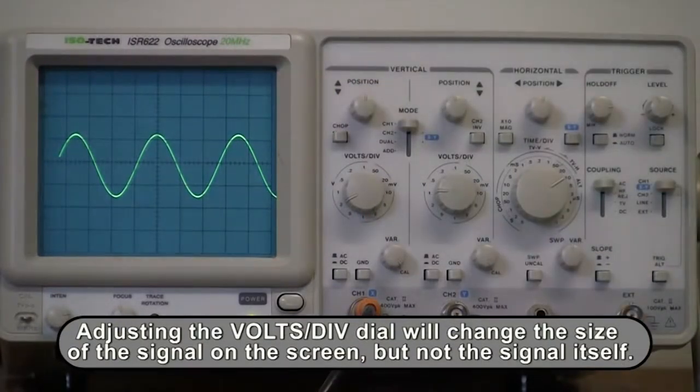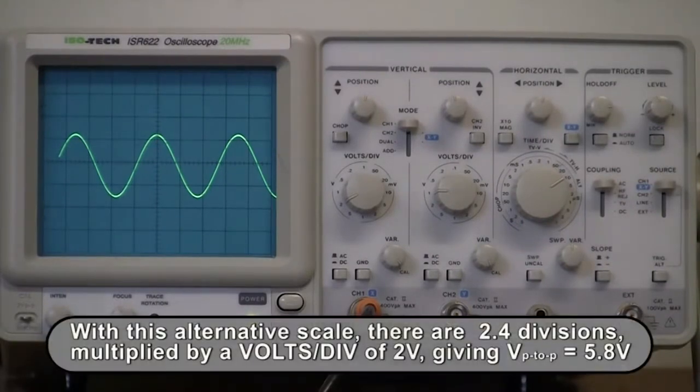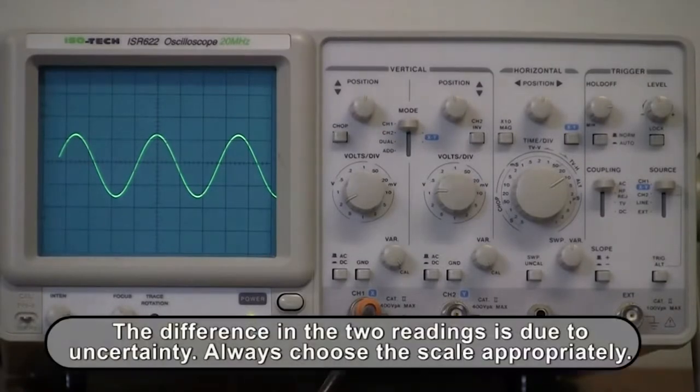With this alternate scale, there are 2.4 divisions, multiplied by a volts per division of 2 volts, giving a peak-to-peak voltage of 5.8 volts. The difference in the two readings is due to uncertainty.